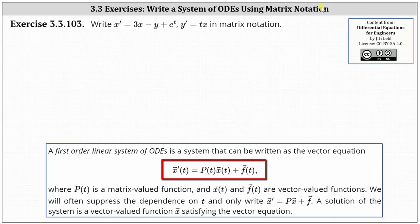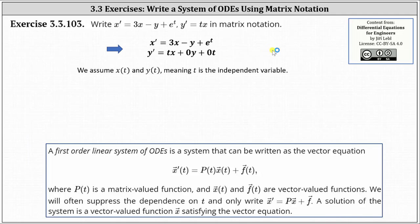x of t and f of t are vector-valued functions. Notice in the first equation, we have x prime equals 3x minus y plus e to the t. The second equation is only y prime equals t times x. It may be helpful to write the second equation as y prime equals tx plus zero y plus zero t, when first learning how to use matrix notation.